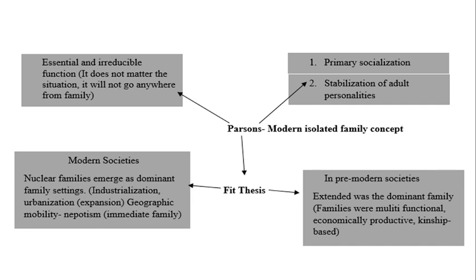As society moved into modern society, the nuclear family emerged as the dominant family setting. As industrialization grew, urbanization expanded and geographical mobility increased, because people needed to move from one place to another to meet their financial needs. The extended family was too difficult to move when families needed to relocate to meet the requirements of a rapidly changing and growing economy, so people moved with just their immediate family.